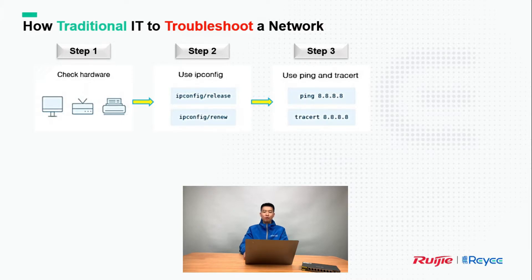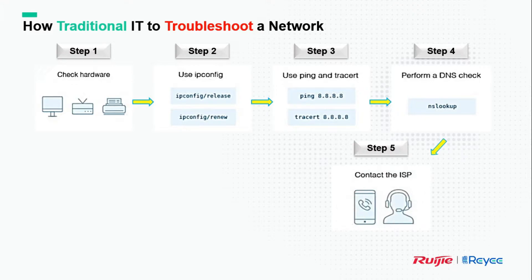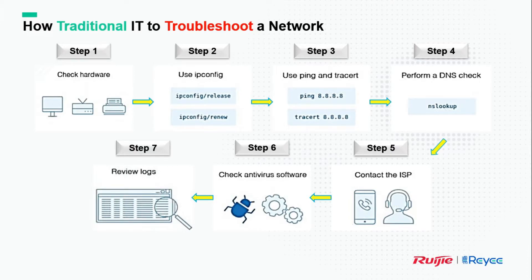Step 4: perform a DNS check to see if DNS is working properly. Step 5: contact the ISP to fix any IP issues. Step 6: check the antivirus software to see if it is blocking your network. Step 7: review the logs to see if anyone changed the configuration or if there is an IP conflict.